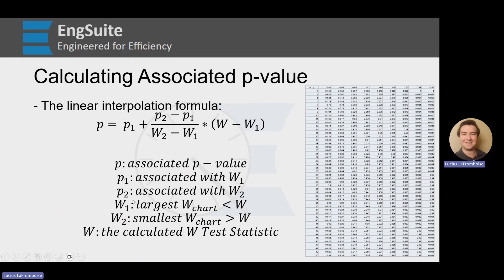w1 is the largest of the W values in the row that is still less than our calculated w, and w2 is the smallest W value in the row that is greater than w. Let's take a look at an example to flesh out what these mean.